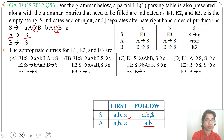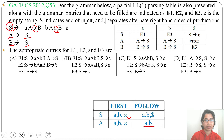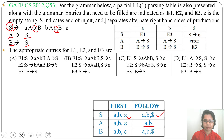Next, what is FIRST of B? FIRST of B will be FIRST of S, which is A, B, epsilon. Then FOLLOW of B will be FOLLOW of S, which is A, B, and dollar. So: FIRST(B) = {A, B, epsilon} and FOLLOW(B) = {A, B, dollar}.